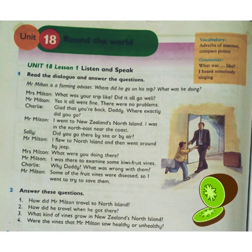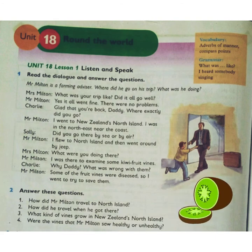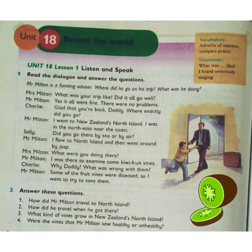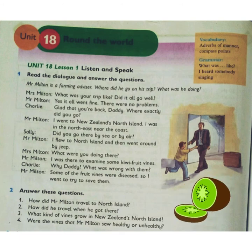Charlie, the son of Mr. Milton, said, 'Glad that you're back, daddy. Where exactly did you go?' Mr. Milton told him, 'I went to New Zealand, North Island. I was in the north-east, near the coast.' Sally, the daughter, asked Mr. Milton, 'Did you go there by sea or by air?' Mr. Milton replied, 'I flew to North Island and then went around by jeep.' So he started by air and then selected a jeep to move around there.